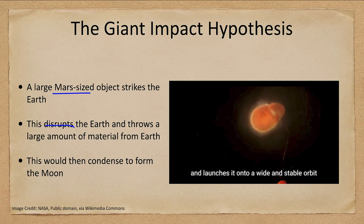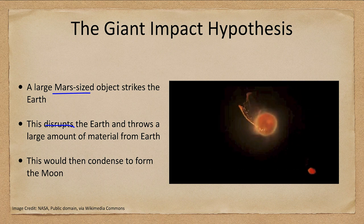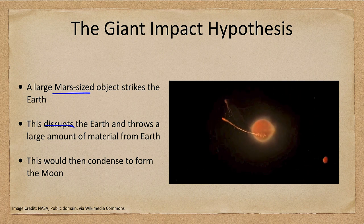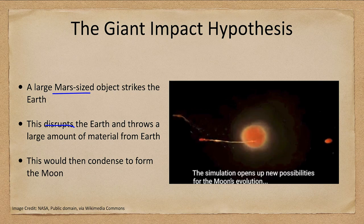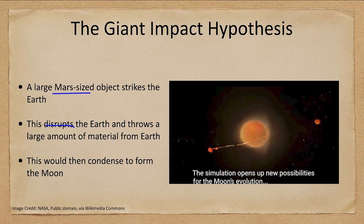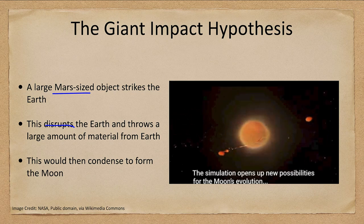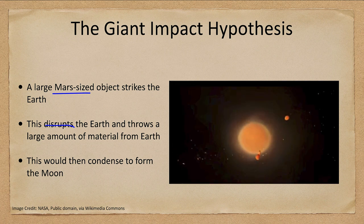It also explains why the other terrestrial planets do not have moons as large as ours. That would be because it is a very rare thing — a very massive collision between two objects.